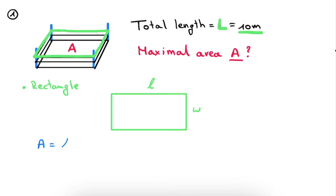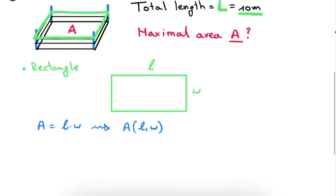The first step is to identify that the area of a rectangle is the length multiplied by the width. And in the language of functions — which is the language we need if we want to solve this problem using derivatives — this means that the area of the rectangle is a function of two variables, the length and the width. Namely, if we change the length, the area changes. Or if we change the width, the area changes as well.